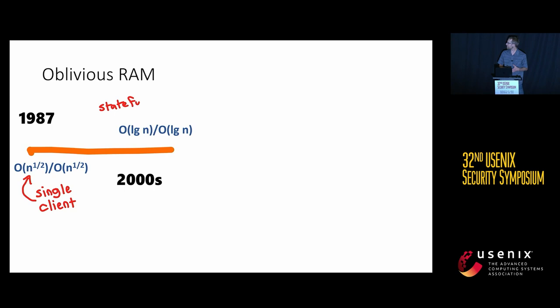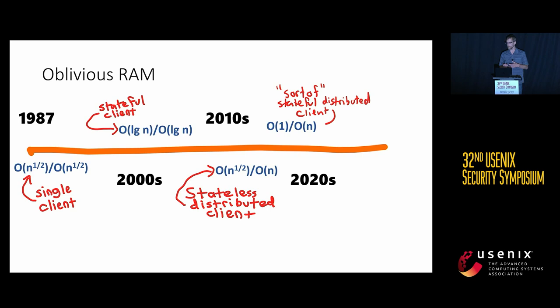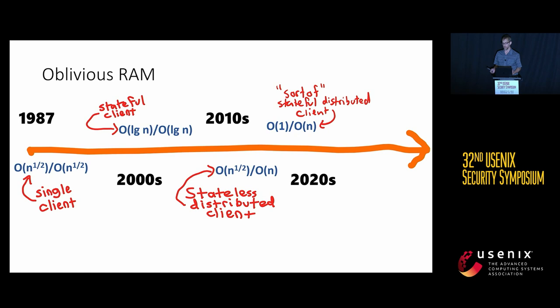This is another distributed ORAM talk. We are attacking ORAM from a slightly different perspective than the previous talk, so I will go through a bit of the history and how we got to where we are. Back in the 80s we had the original ORAM construction. Over the years things got progressively more efficient — from square root communication and computation per access to logarithmic communication and computation per access. These schemes hold some state on the client side to assist in interacting with the server.